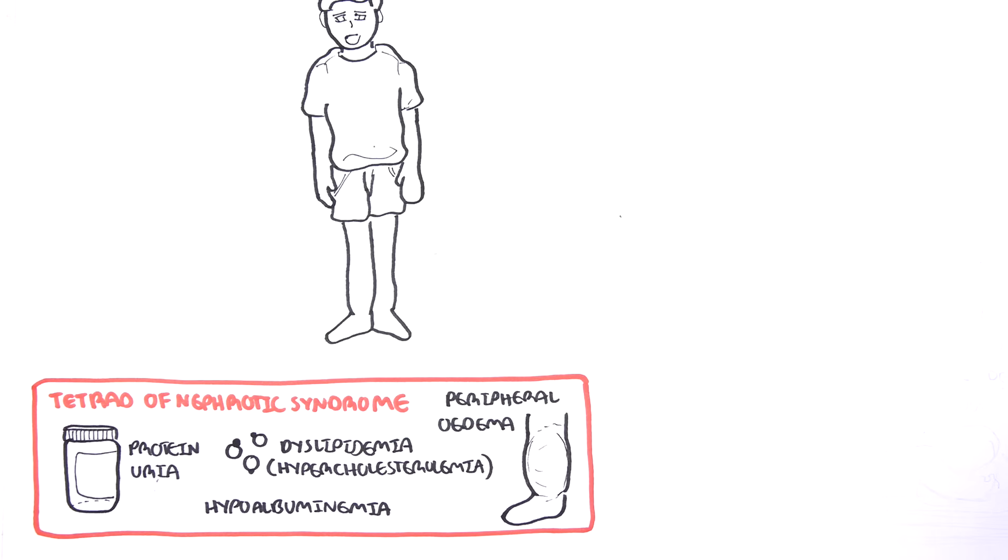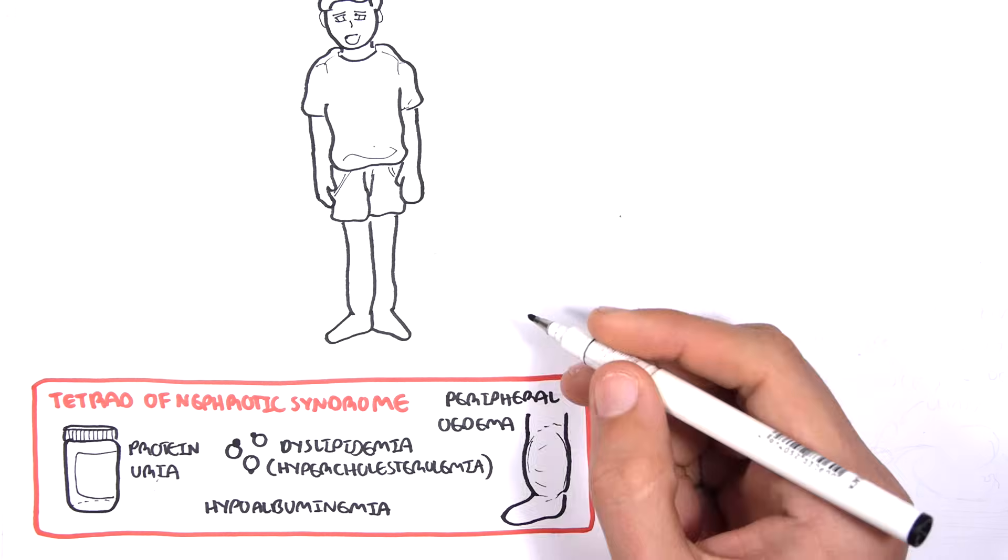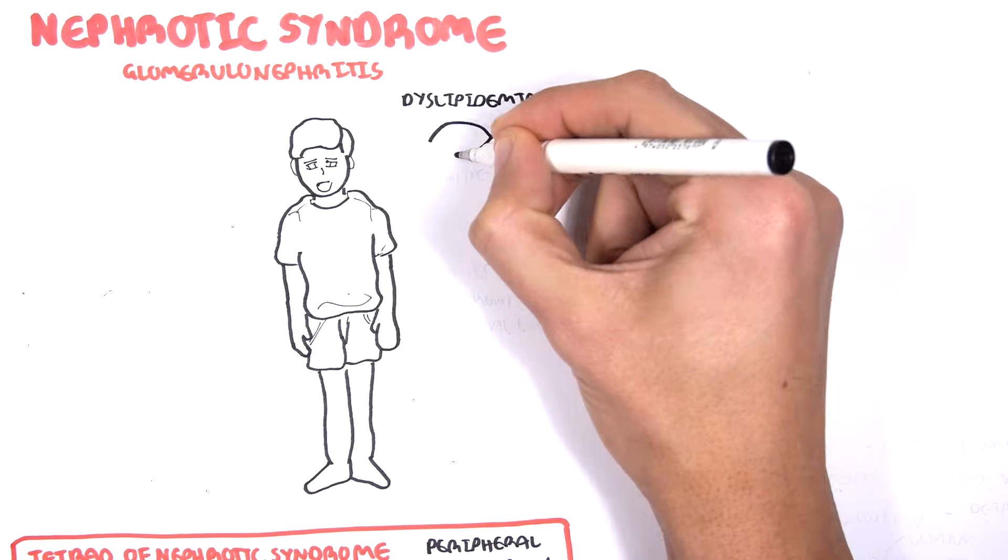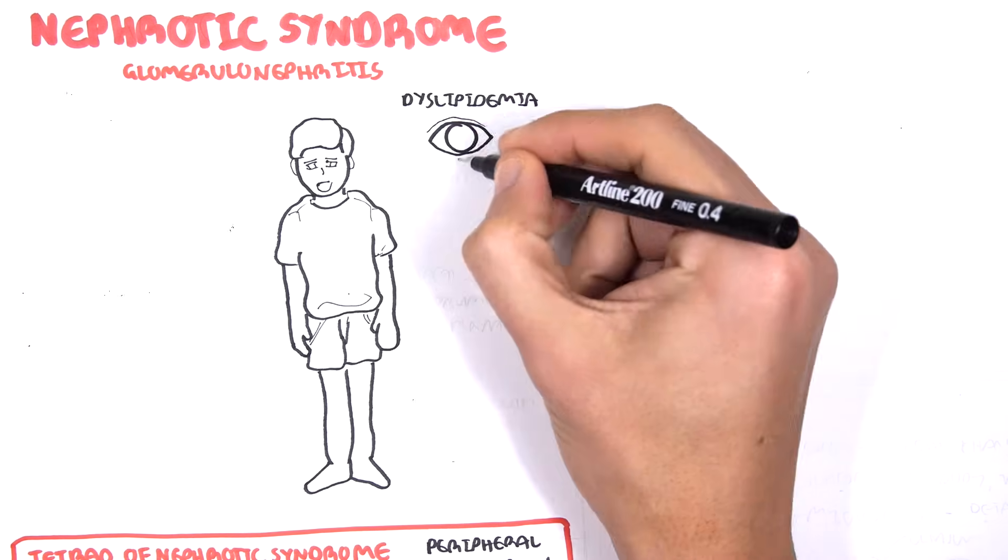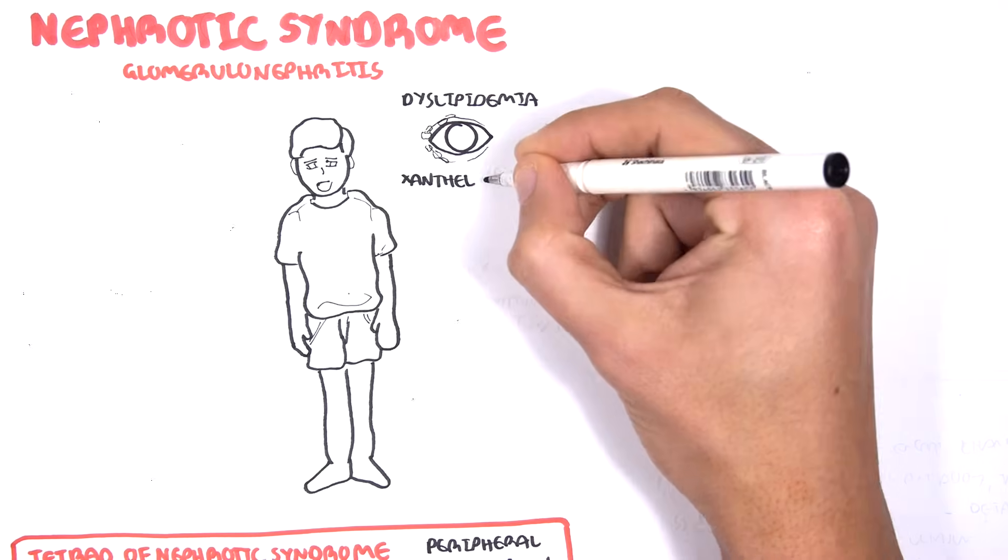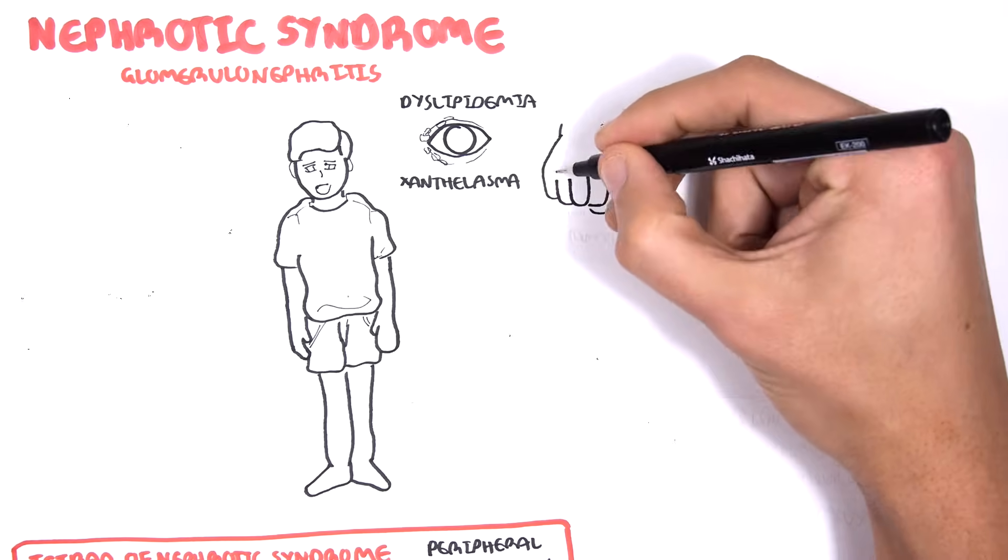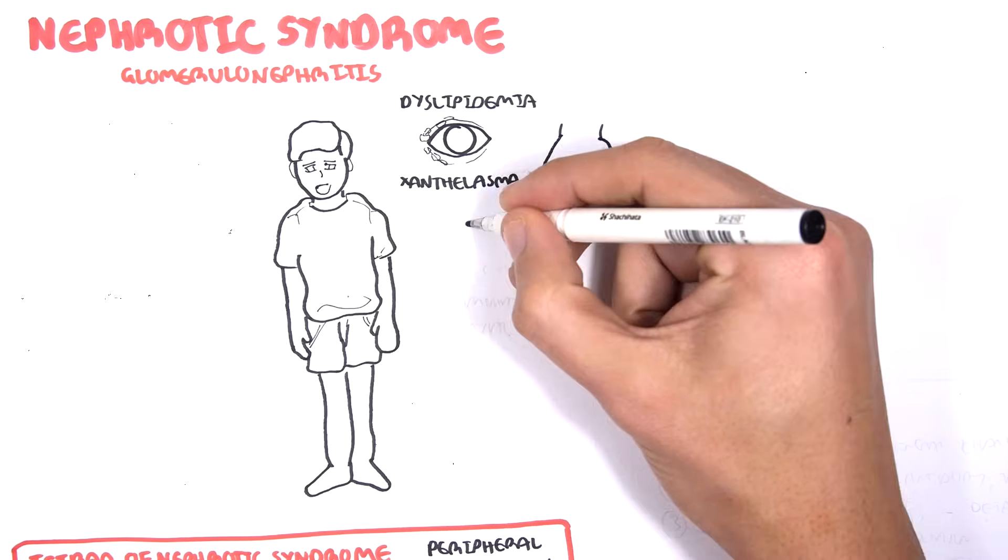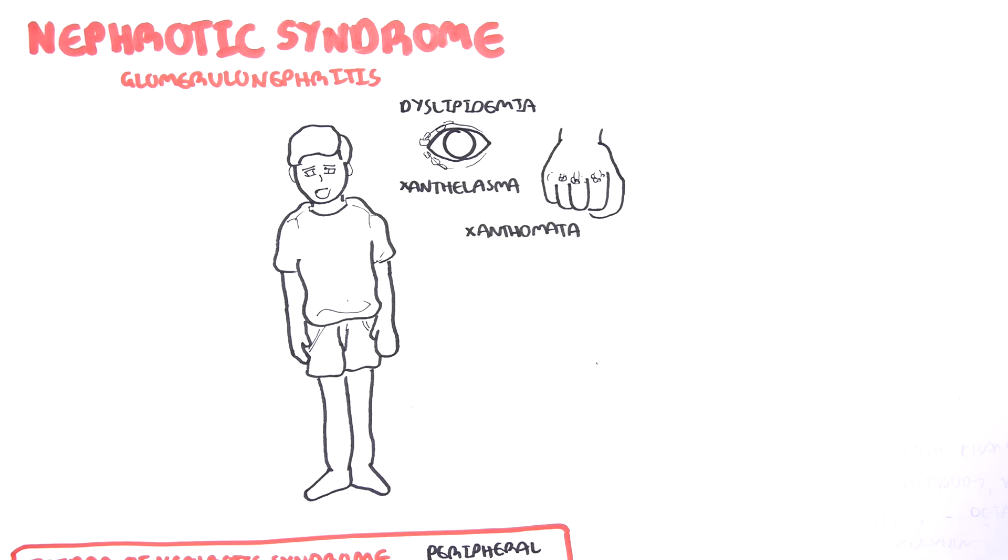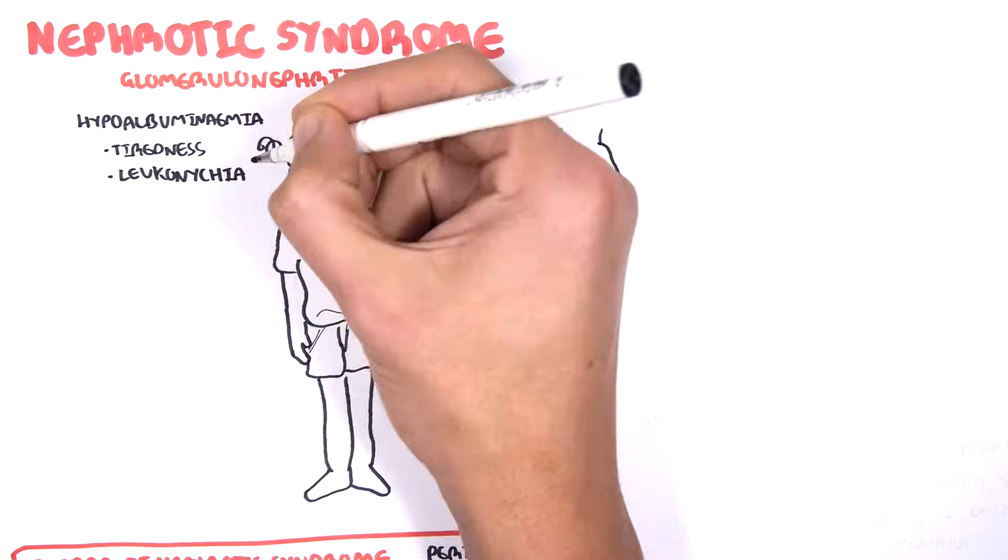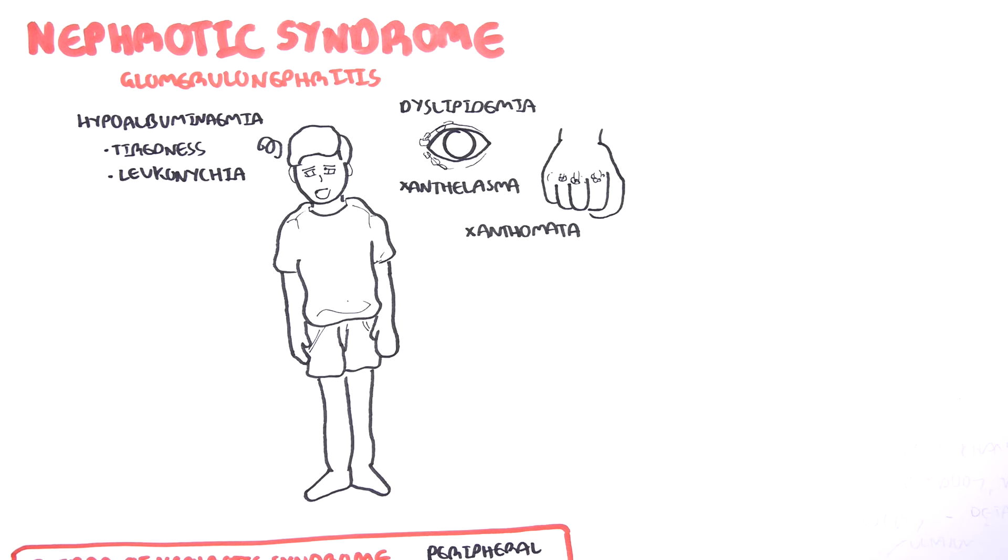Based on this tetrad, we can expect to see some signs and symptoms. For dyslipidemia and hypercholesterolemia, we can see xanthelasma, which is deposits of cholesterol around the eye, and xanthomata. Hypoalbuminemia results in tiredness and leukonychia striata, which is changes occurring along the nail bed.